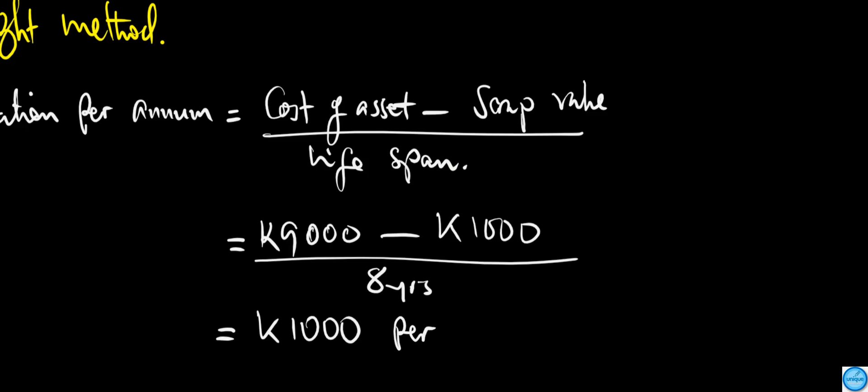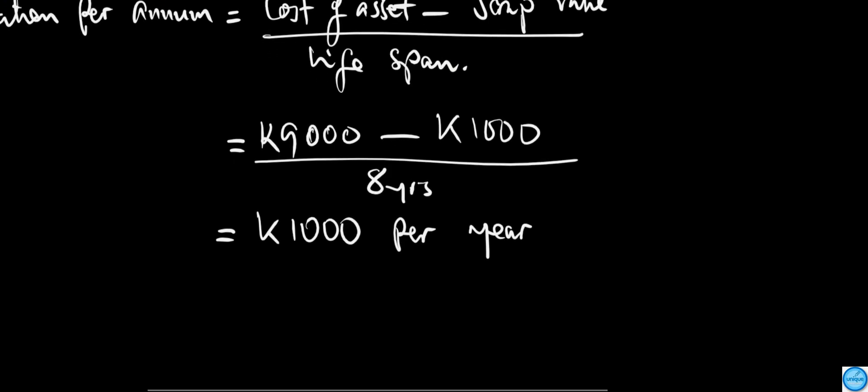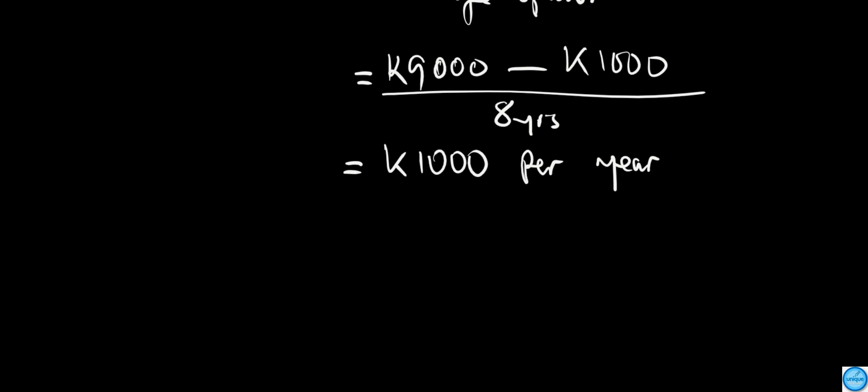This is the depreciation per annum. To find the cost of the asset in the 8th year, we start with the original cost which was K9,000. In the first year, it will be K9,000 as the cost of the asset minus K1,000.